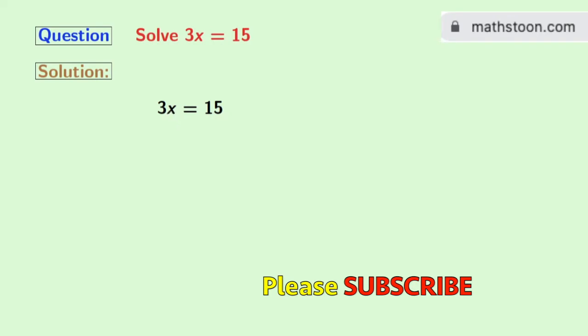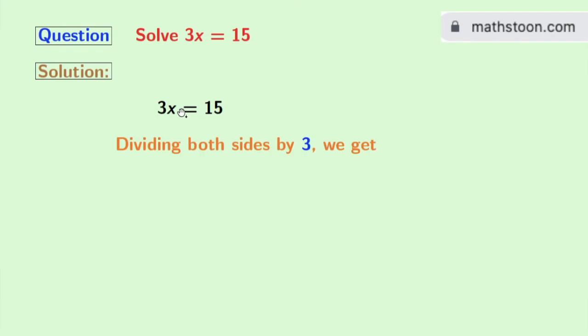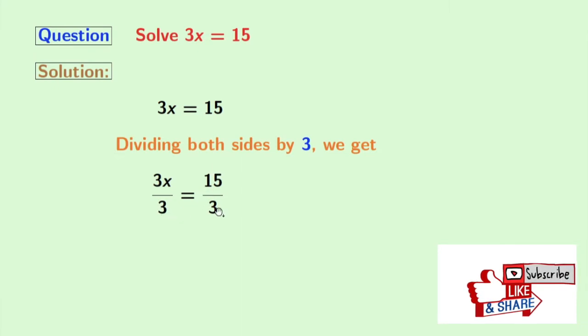In order to do that, we will divide both sides by 3. Doing so, we get 3x divided by 3 equals 15 divided by 3.